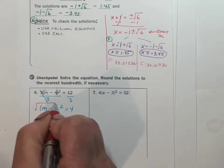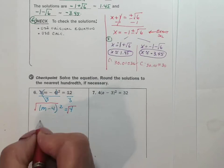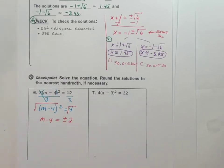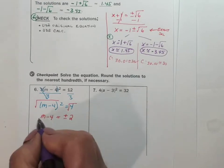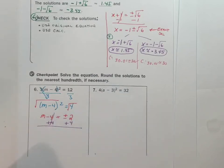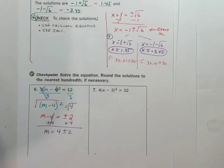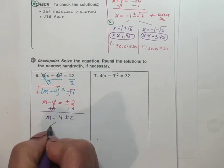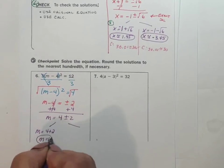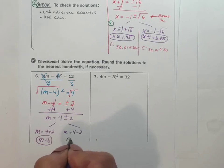And then we take the square root of both sides. We took the square root of a perfect square, so we get m minus 4 is equal to plus or minus 2. So now we've got to solve for m — we add 4 to both sides. And so we're going to get m is equal to 4 plus or minus 2. So m equals 6, and m is equal to 4 minus 2, so m equals 2.